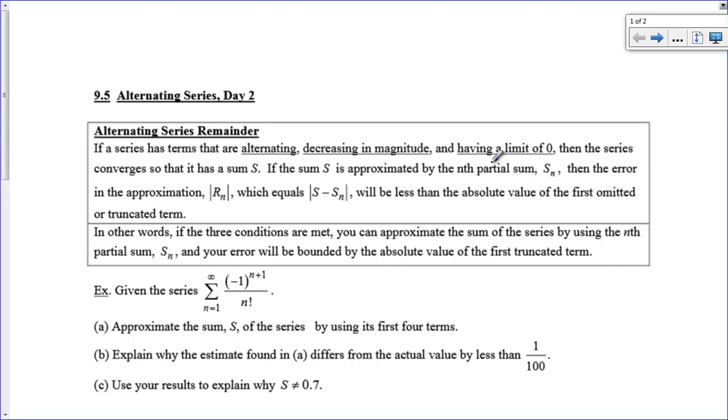That means you can approximate it by some partial sum. You could go out four, five, six, seven terms and say I think it's approximately equal to this. If you do that, there's going to be an error. Your error is equal to the absolute value of the actual sum minus your approximated sum.